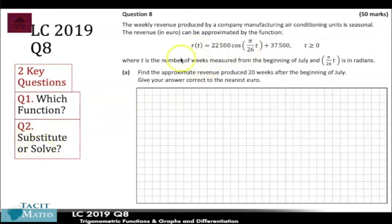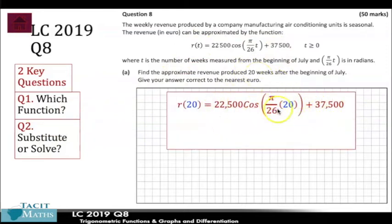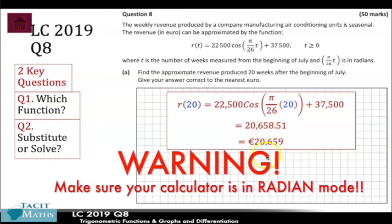The second question is: are you substituting or are you solving? This function tells us the revenue produced by a company depending on the number of weeks. So if I wanted to know the revenue after five weeks, I put five in instead of t. For question one, it asks for the approximate revenue after 20 weeks, so we use the original function and substitute 20 in for t. Your calculator does all the work — it comes out as 20,658.51, so that's the revenue to the nearest euro after 20 weeks.